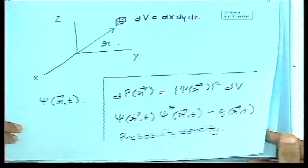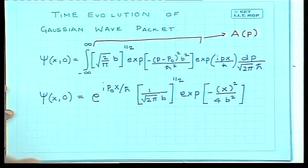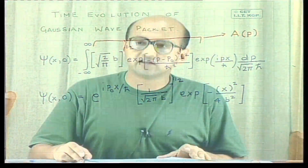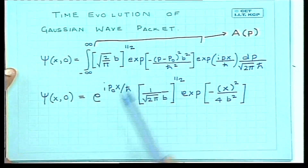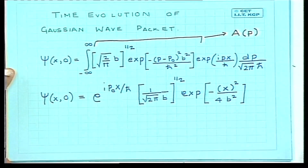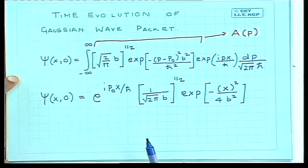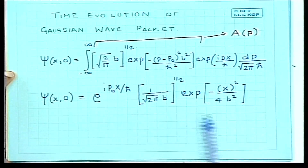Analytically, this is not the way we go about evolving the wave function. Let us look at one situation where we can study the evolution — the free particle — specifically the Gaussian wave packet, which we have been dealing with for the past few classes. This Gaussian wave packet corresponds to a particle with mean momentum p₀, and we evaluated the wave function at t = 0.